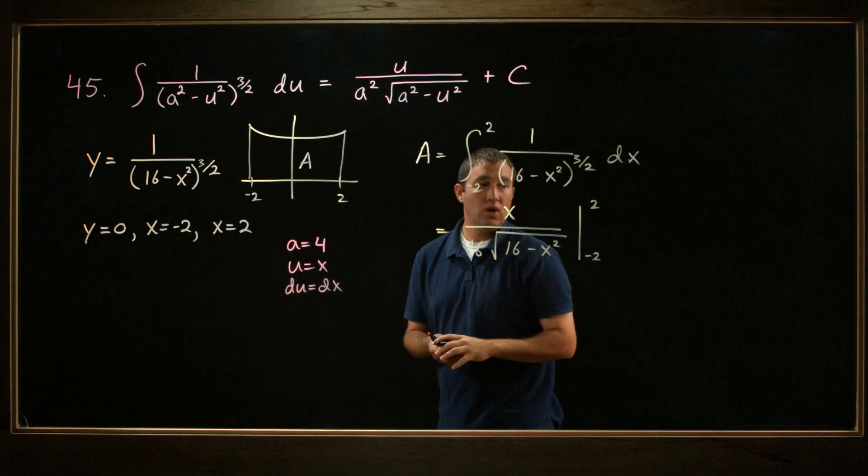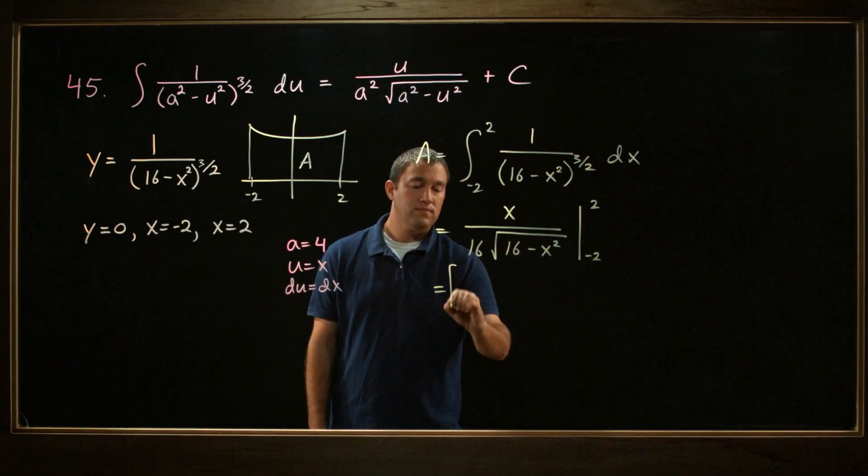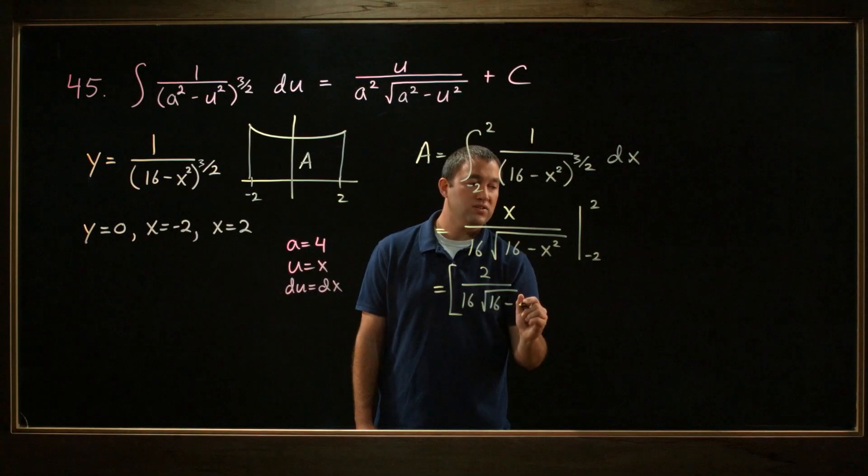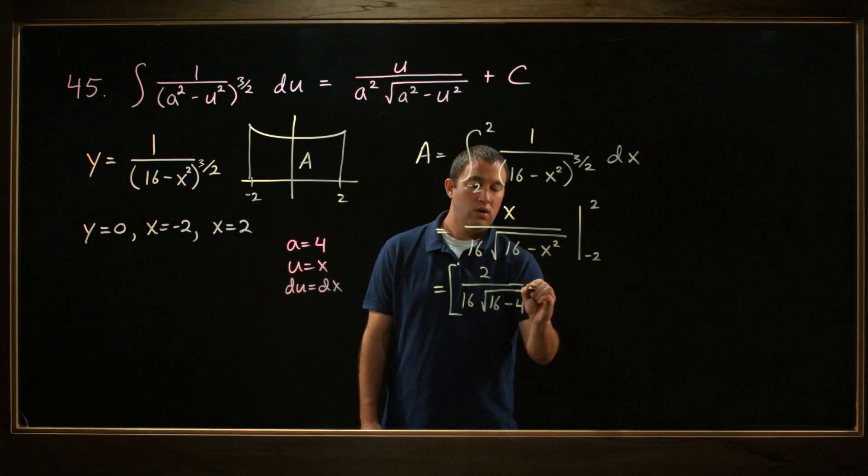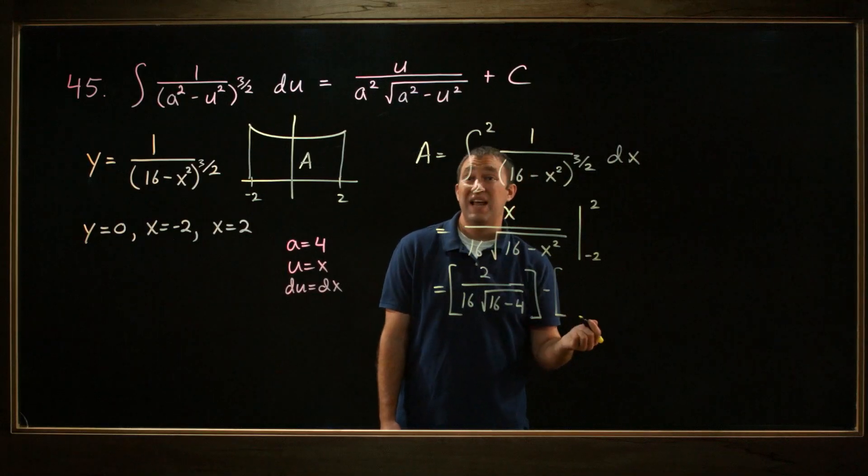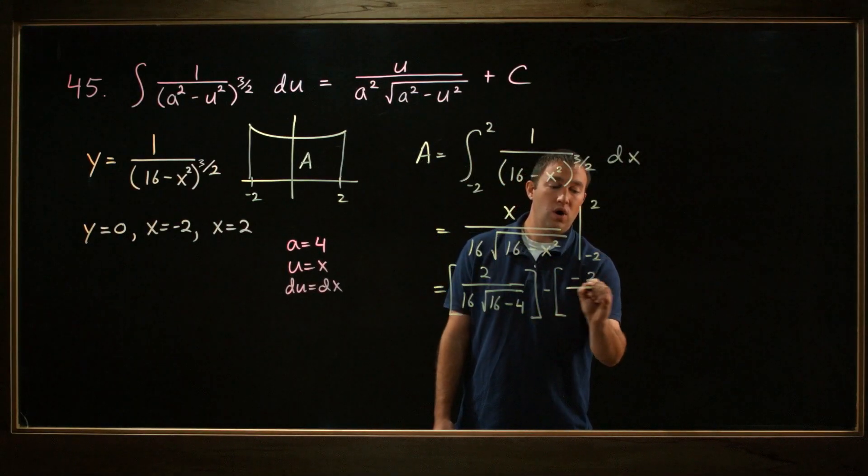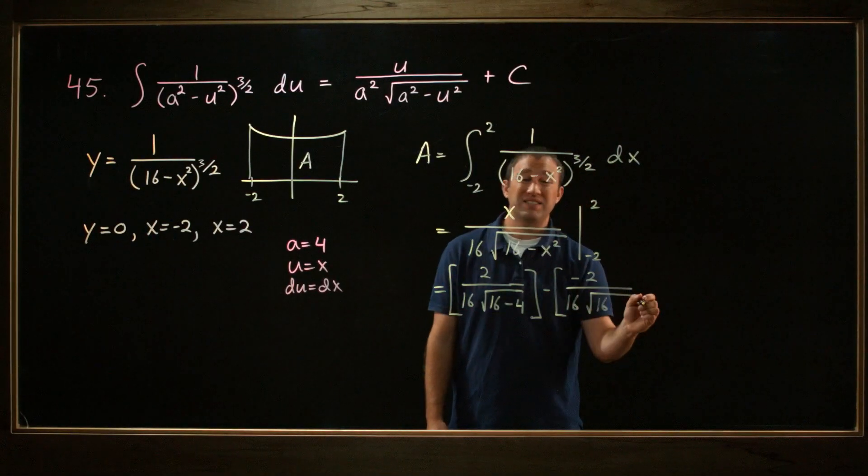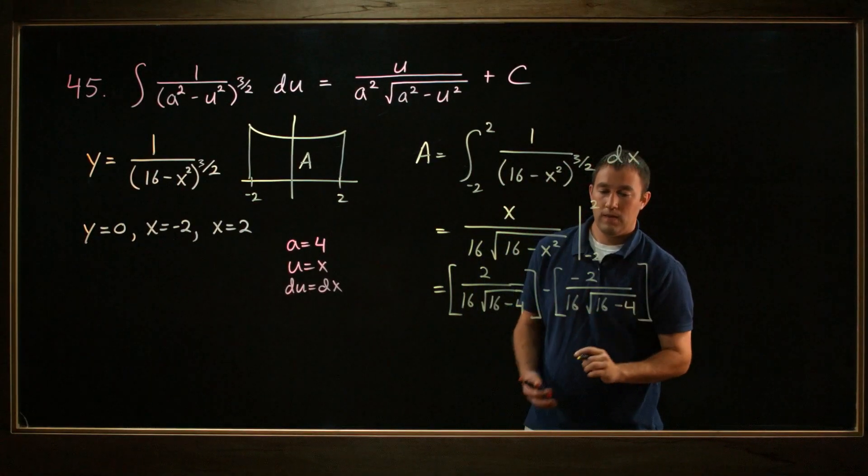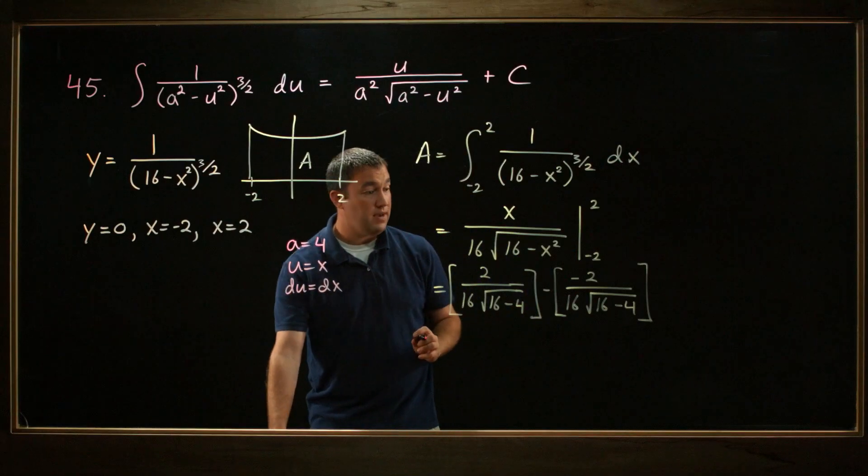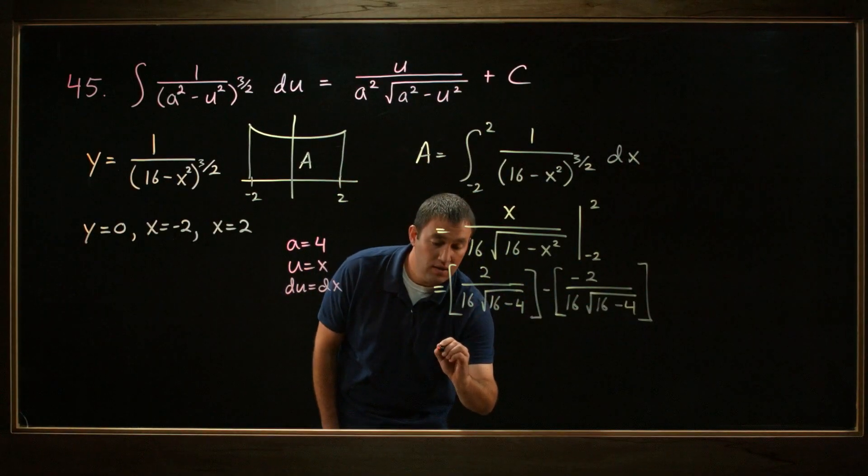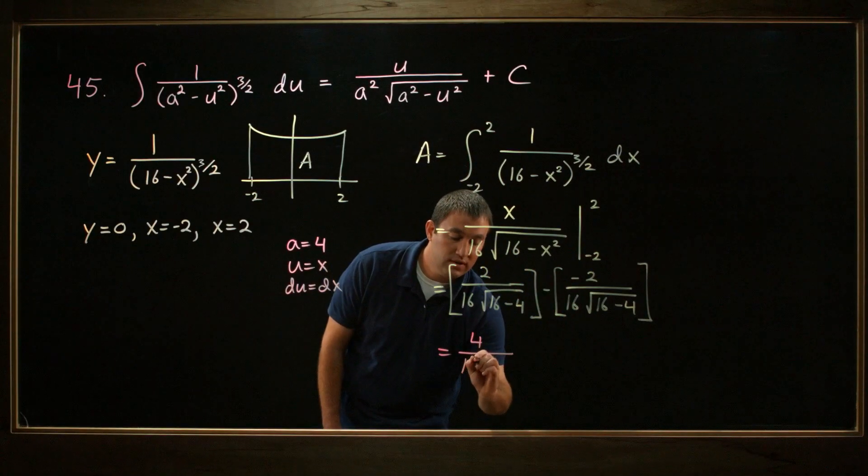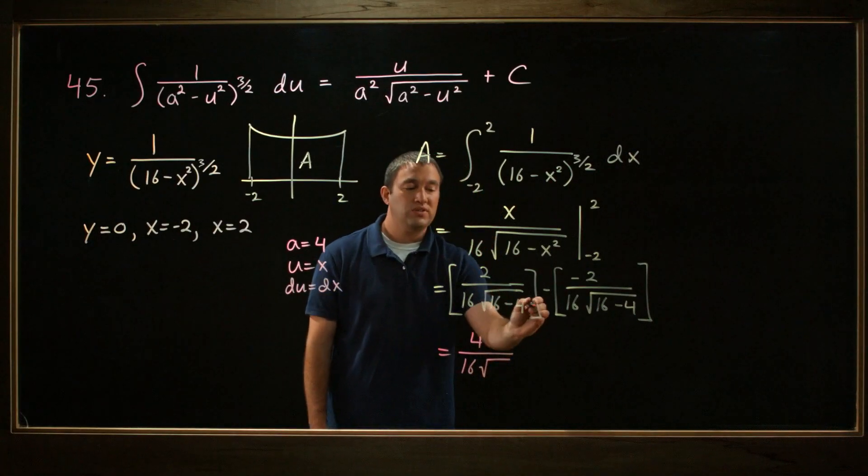Well, if I plug in 2 into this, I'll have 2 over 16 times the square root of 16 minus 2 squared, or 4, minus, if I plug in a negative 2, I'll have negative 2 over 16 times the square root of 16 minus a negative 2 squared. Well, that's still minus 4. Well, you might notice that these denominators are exactly the same, so I can go ahead and add the fraction together. This is going to be 2 minus a negative 2, or 4, over 16 times the square root of, well, 16 minus 4 is 12.